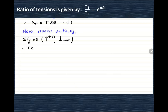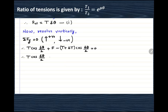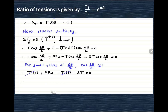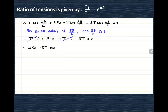Resolving vertically — upward forces are positive, downward forces are negative. T cos(delta theta by 2) is positive. Mu Rn is also positive. Whereas (T plus delta T) cos(delta theta by 2) is negative, giving minus T cos(delta theta by 2) minus delta T cos(delta theta by 2). For small values, cos(delta theta by 2) equals 1. Substituting, canceling out T, we get: mu Rn equals delta T.